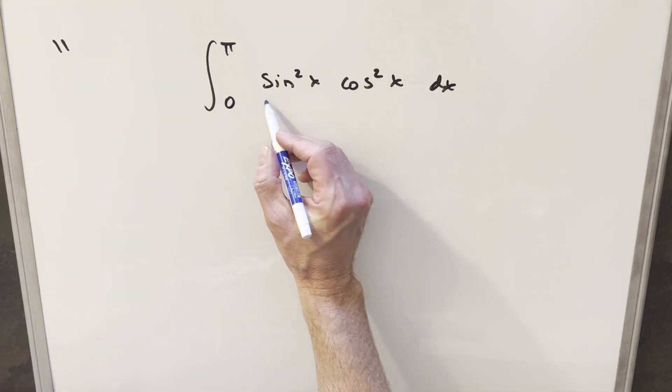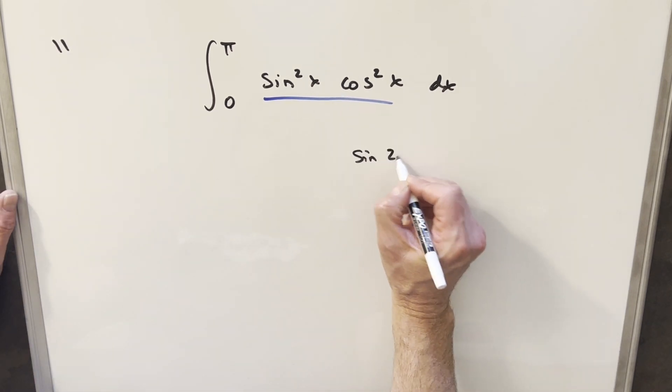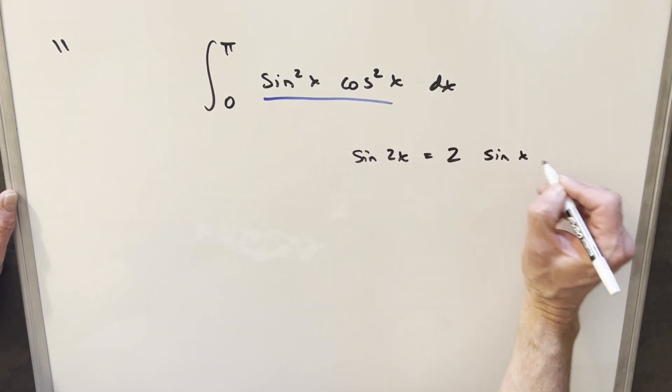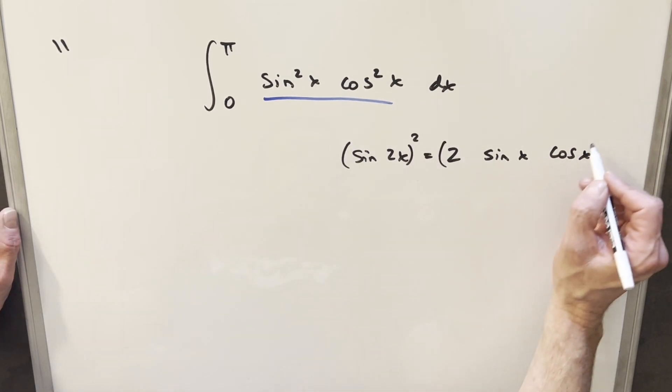Right away I want to notice the similarity of what we have here to the double angle formula for sine. So let's just take a look at that really quick. If we have sine 2x, this is the same thing as 2 sine x cos x. But then if I just square this on both sides,